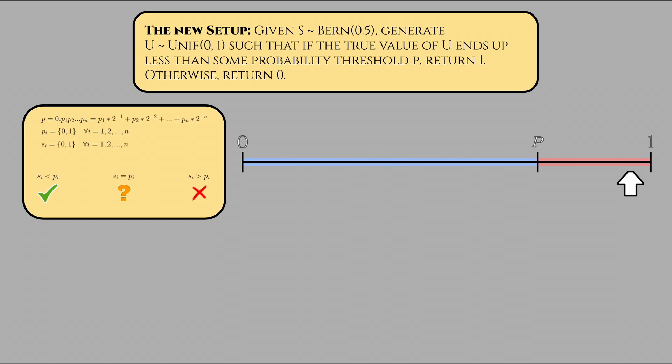This, of course, brings us to the second scenario. If we just keep matching the most significant bits over and over between the coin's simulated value and the probability threshold's corresponding bits, we don't actually know if the final value will be greater than or less than the threshold, so logically we have to keep going.